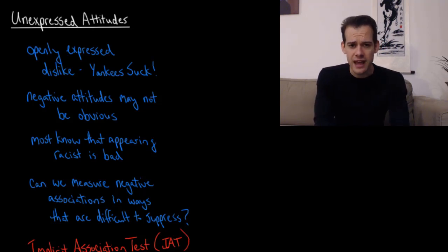So can we measure these types of negative evaluations or negative associations in ways that are difficult for people to hide, ways that are difficult for them to suppress? This brings us to the implicit association test.